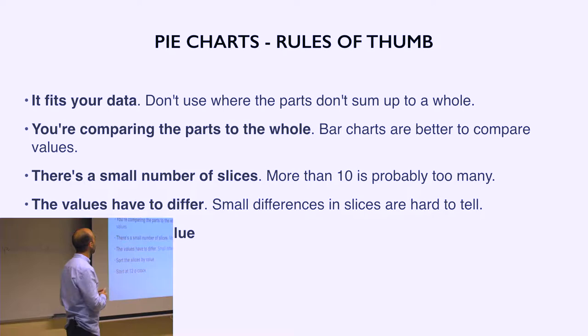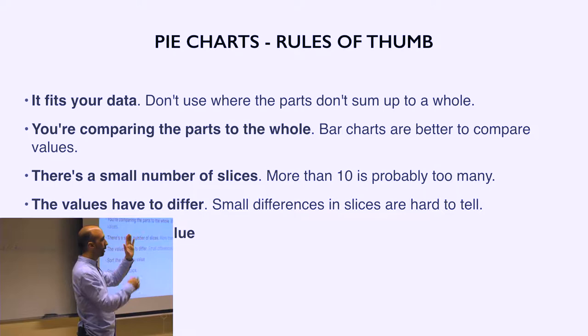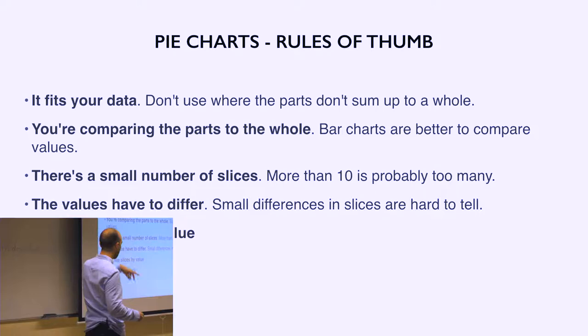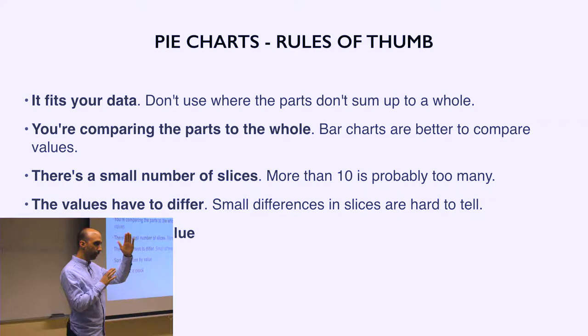Also if you are comparing the parts to the whole and not the parts among themselves, if you are comparing the parts between themselves, then again, a bar chart might be a better option. Also it is good when you have a small number of slices. If you have, this is completely random, but more than 10 will probably be too much. And also this is very important. The values have to differ. If you have similar values, then as in this example, you won't see the differences. You won't be able to spot them. Then these two, there is no research. There is nothing. It's just something that seems to be correct, seems to work, which is sort of the slices by value, putting the biggest one at the beginning. And then as they decrease on clockwise, for instance, or reverse. This is useful because even if you have two values that are different, having them ordered will make sense to the reader as in reading order. And the other one is to start at 12 o'clock. So you have a reference point to compare your angles.